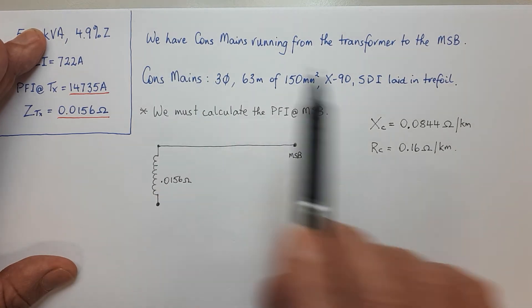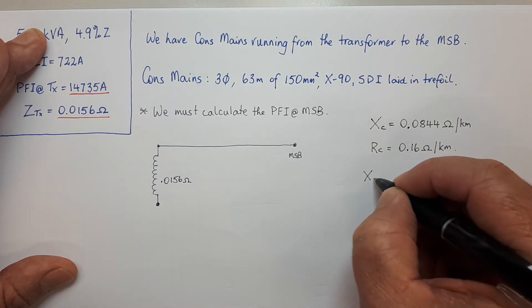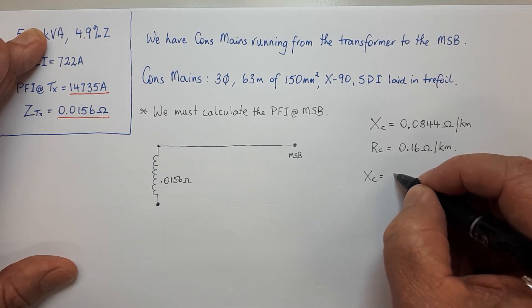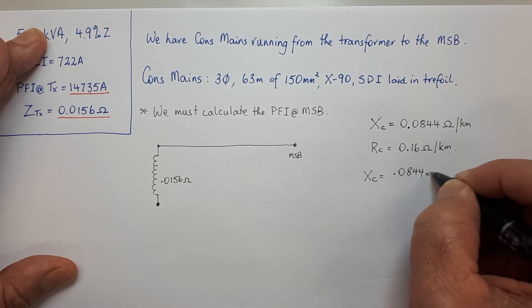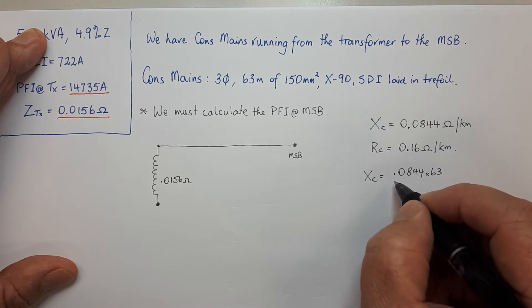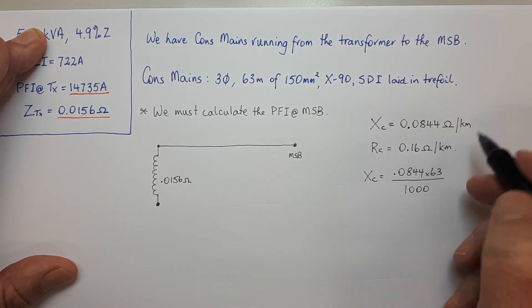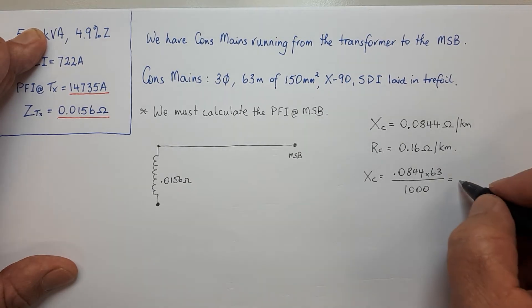The reactance for 63 meters of that cable is 0.0844 times 63 over a thousand because it's in kilometers, and that gives us 0.0053 ohms of reactance.